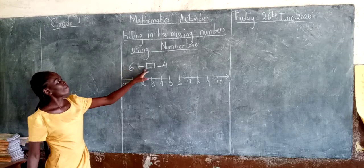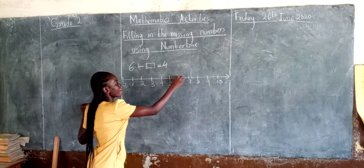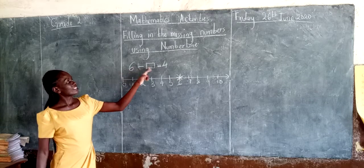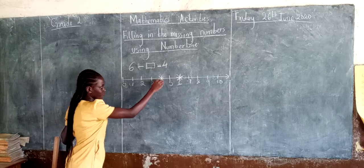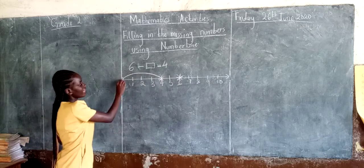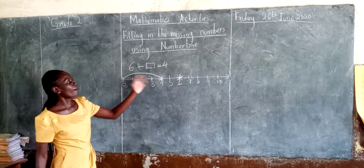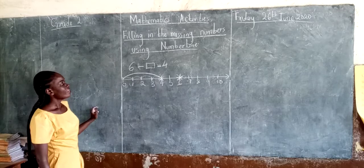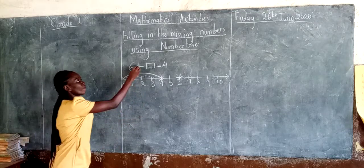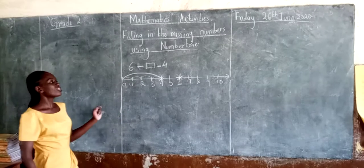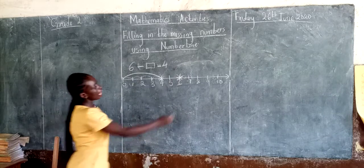The equation is: a number taken away from six gives us four. We count and mark number six. Then come and mark four. From here to here, how many steps? 1, 2, 3, 4 — from zero to four, we skip four steps. When looking for the missing number in subtraction, we don't count forward like in addition — we count backward.